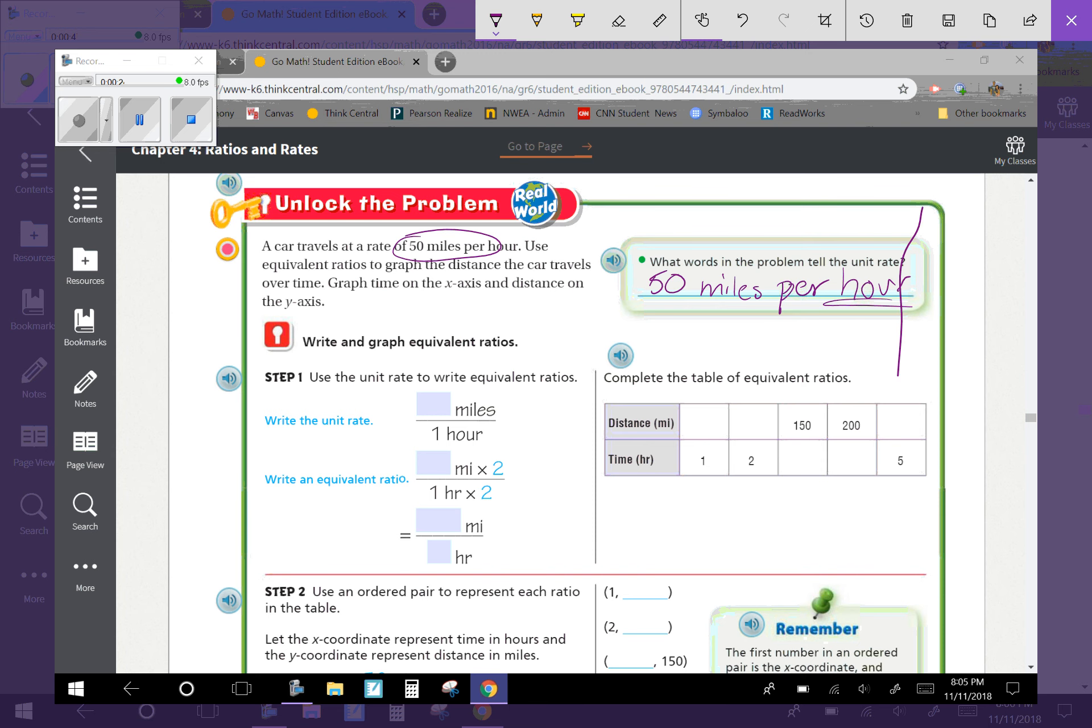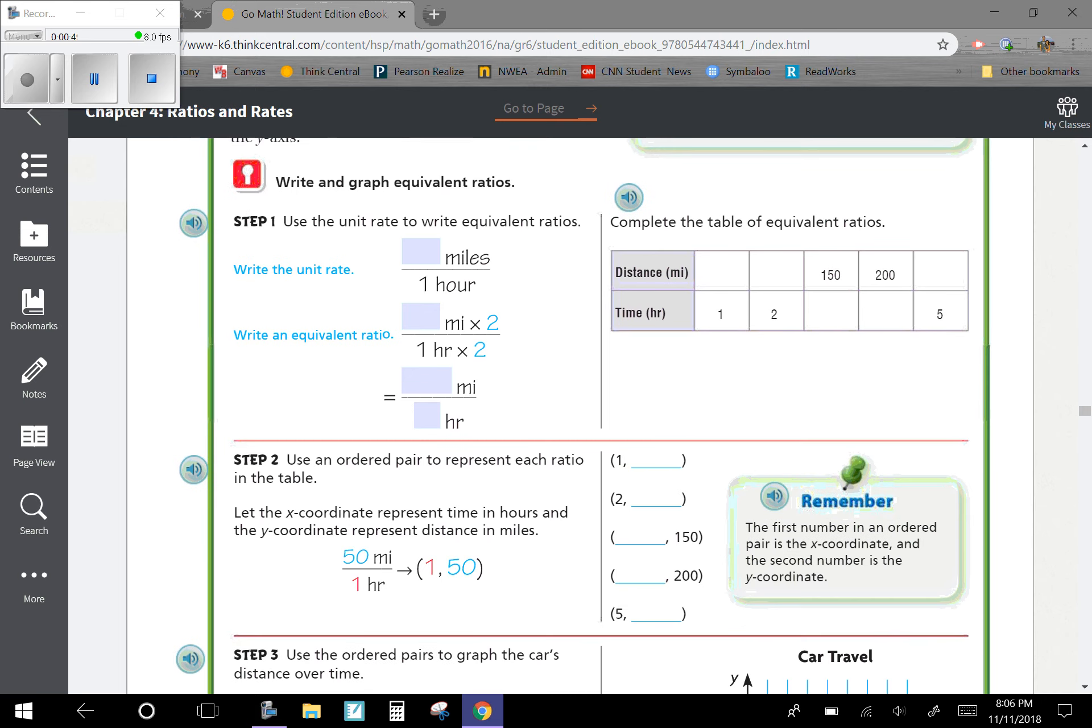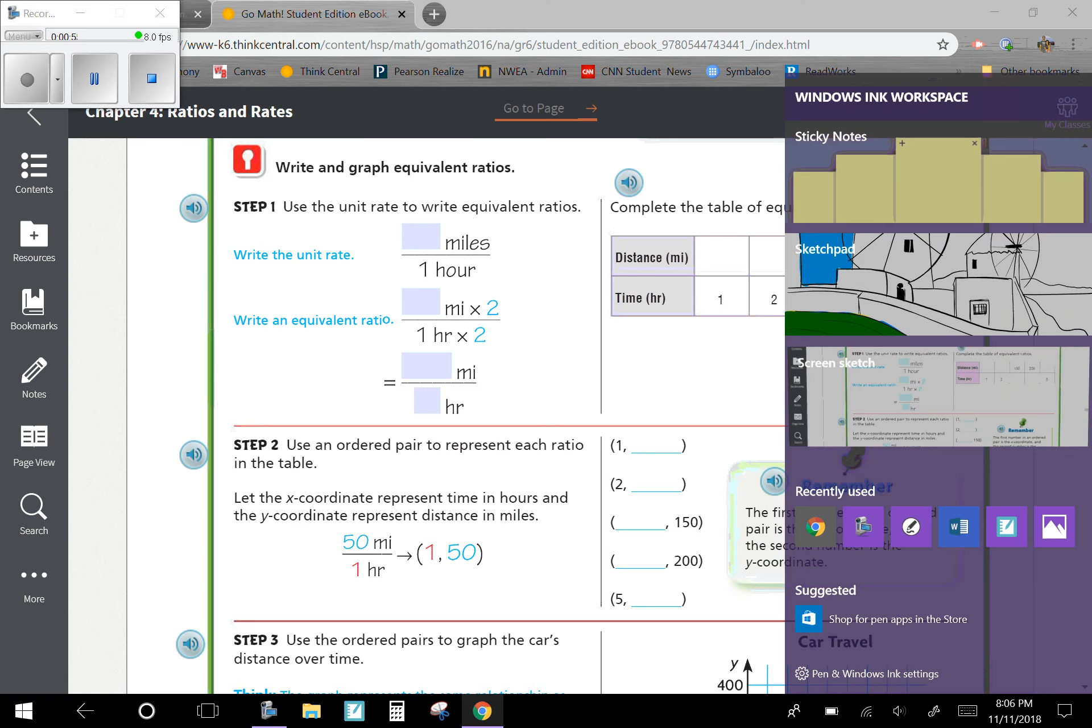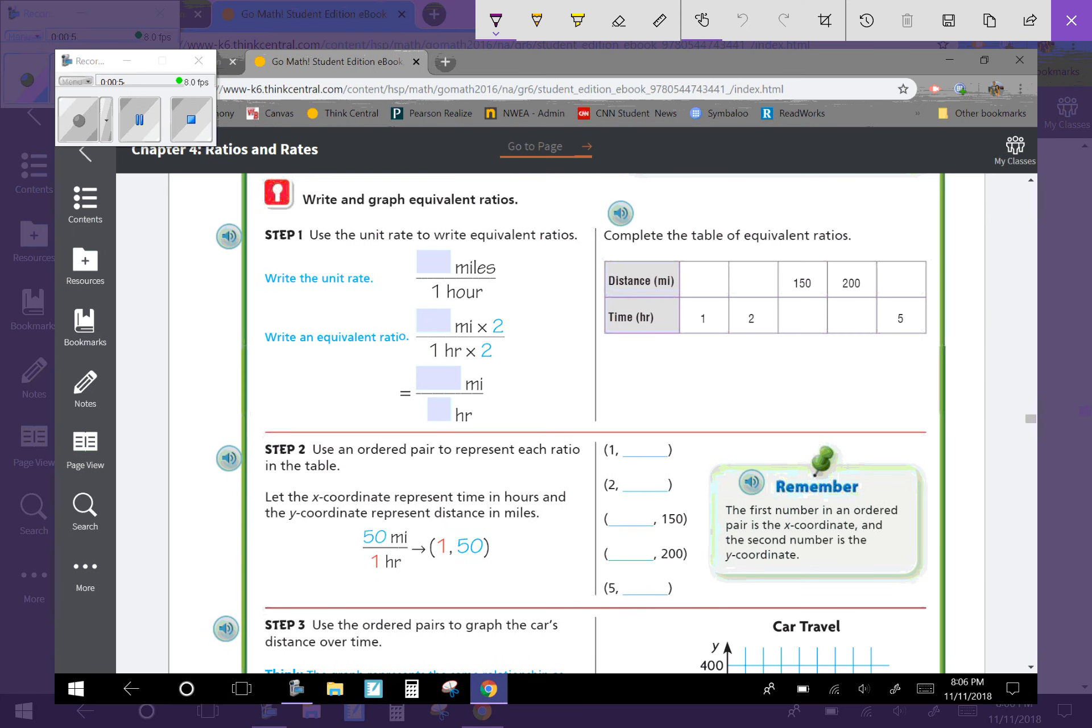Step 1 is to write and graph equivalent ratios. We're going to use the unit rate to write equivalent ratios. So we know that there's 50 miles in one hour - that's our unit rate.